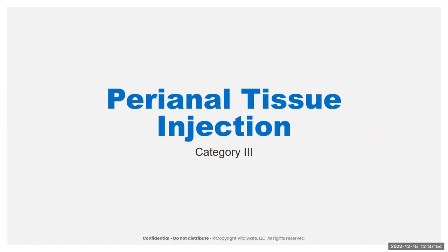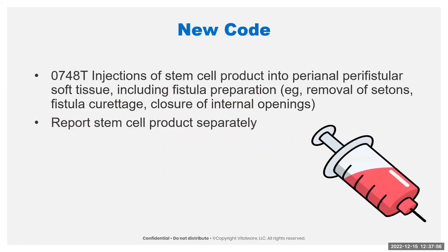Another Category 3 code is 0748T, an injection of a stem cell product into perianal perifistular tissue. This procedure is still in clinical trial, so it won't be reported a lot. You can also report the stem cell product separately, and I would encourage you to do so because a lot of those stem cell products are very expensive. This is used to treat Crohn's disease.